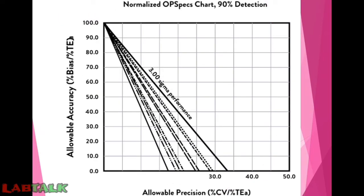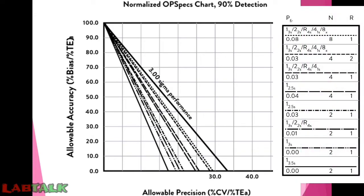For all practical purposes we use this type of normalized OP specs chart for the 90% detection limit. You can see some slanting lines between the two major lines, and each of these lines corresponds to a QC rule or a QC plan. The key shown here corresponds to each line in this OP specs chart, and each line will form an individualized QC plan for our specific condition.